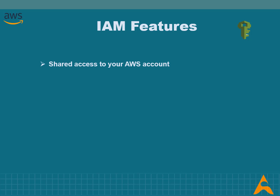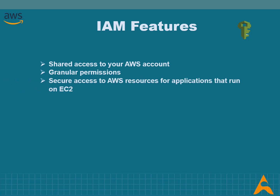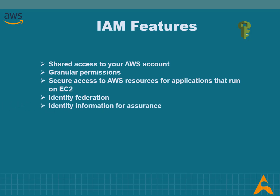IAM has many important features. It provides shared access to your AWS account, granting other people permission to administer and use resources without sharing your password or access key. Each user can be granted a different set of granular permissions as required to perform their job. IAM can also provide applications running on EC2 instances with temporary credentials to access other AWS resources, and allows user access without requiring AWS accounts by providing temporary credentials.